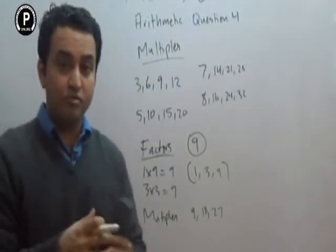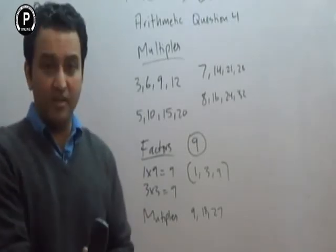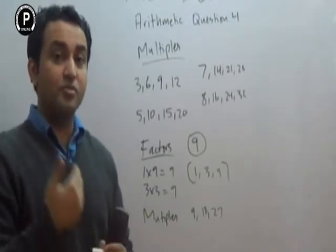Factors: when you multiply two numbers to get that number. Multiples: when you take any number and multiply to get the product.